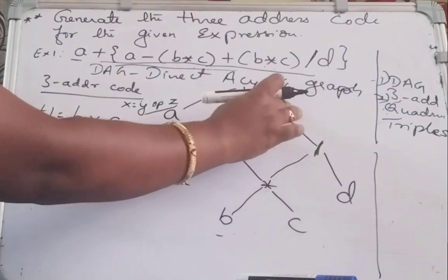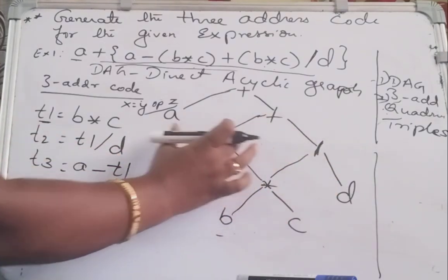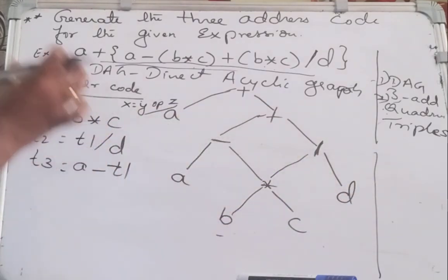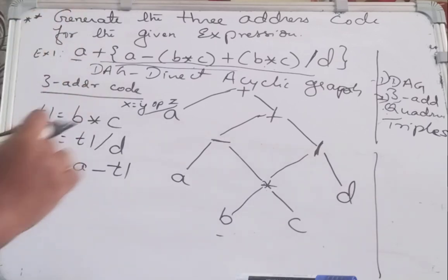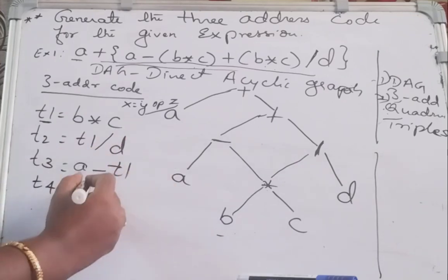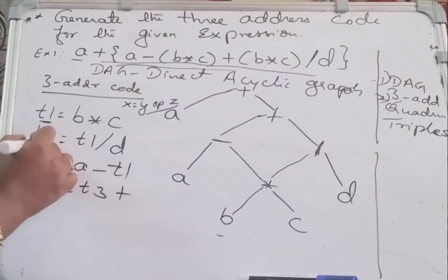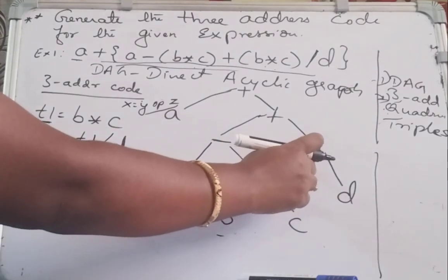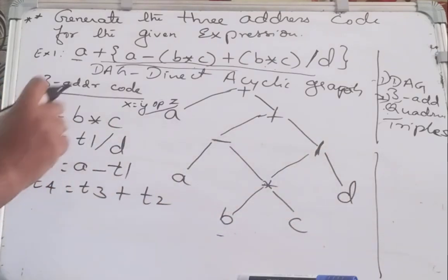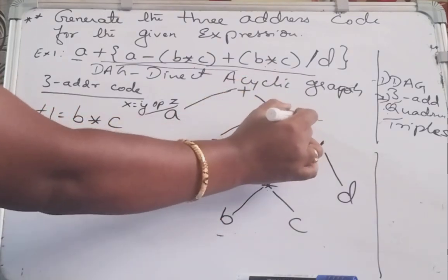This part is finished. At the top we have plus — this plus this. The result of the left-hand side is stored in T3, and the right-hand side part is stored in T2. So take the next temporary register T4. T4 = T3 plus T2. B star C divided by D is stored in T2. Up to here we have generated the code.